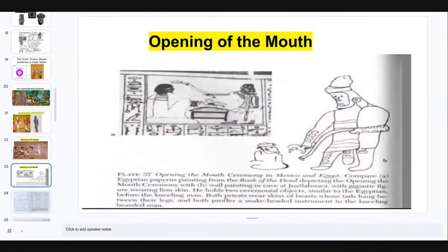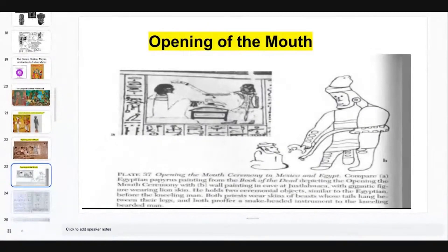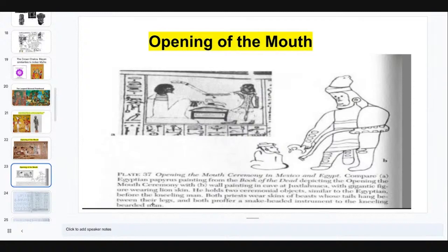From the Egyptian Presence in America B.C., the Opening of the Mouth ceremony is depicted in Mexico with a wall painting taken inside a cave at Justa La Huaca. There is a gigantic figure wearing lion skin or possibly leopard skin — it has spots — so we can argue it's a lion, leopard, panther, or jaguar skin; we know it is some form of feline skin. He is holding two ceremonial objects similar to what's depicted in Egypt before a kneeling man. Both priests wear skins of beasts whose tails hang between their legs, and they both proffer a snake-headed instrument to the kneeling bearded man.